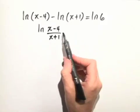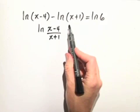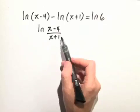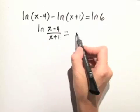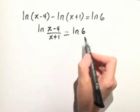Remember, when you have a natural log minus another natural log, you can write it as one natural log and just divide the arguments, which equals the natural log of 6.